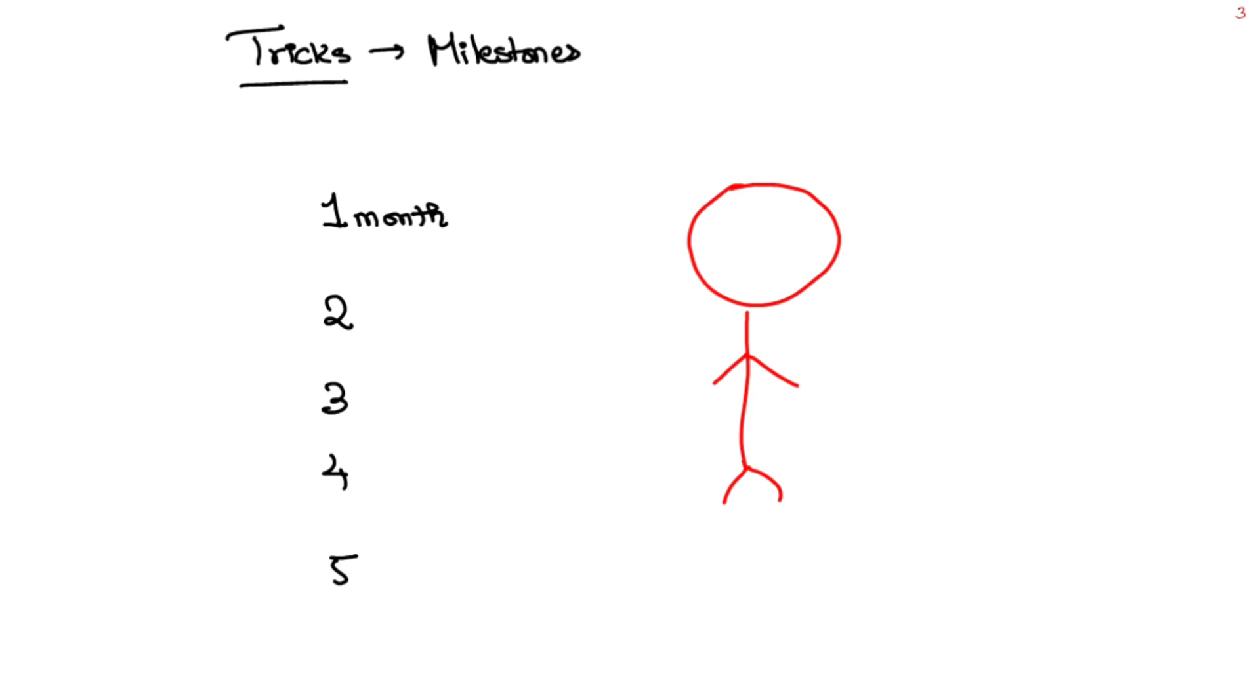First, let us see up to fifth month. Imagine a baby in supine position. Remember this diagram to remember the milestones. Starting with alert to sound in first month.